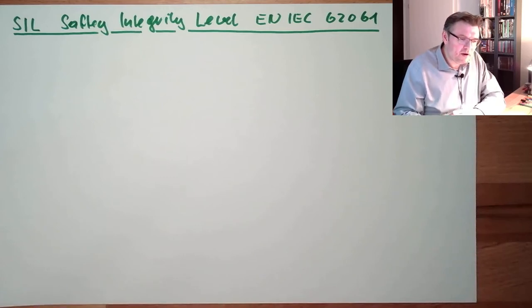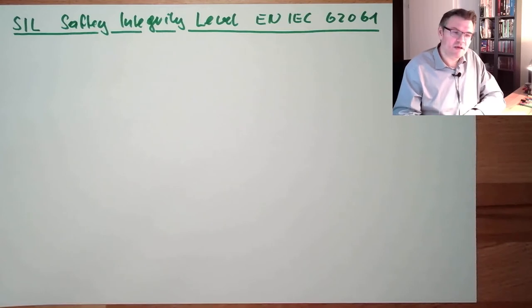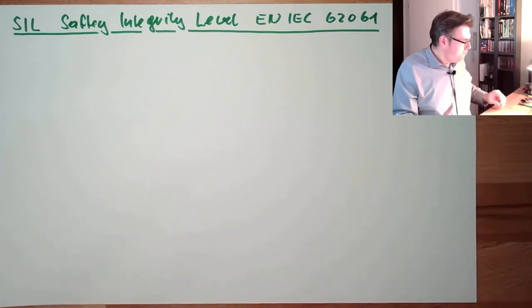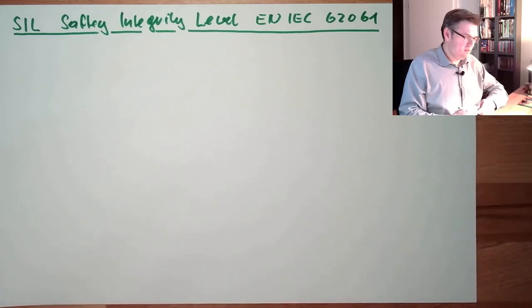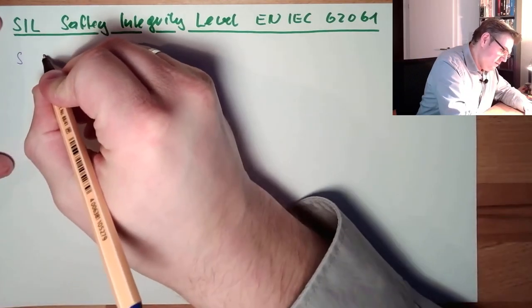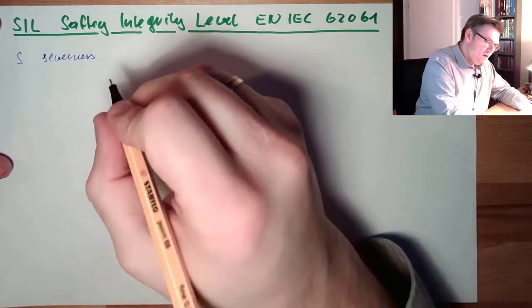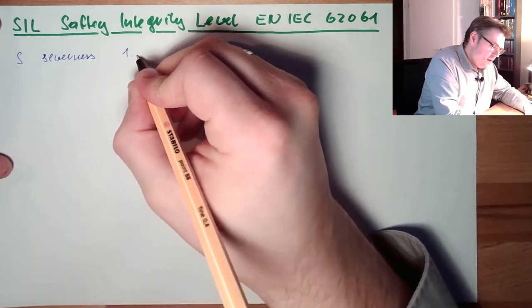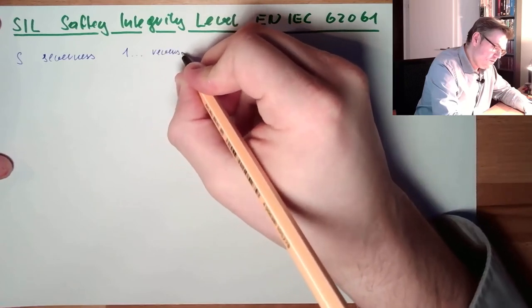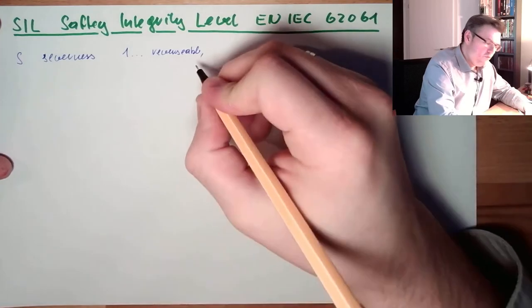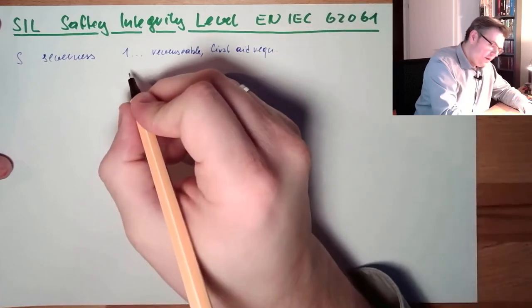First, we are going to talk about how we can determine what SIL level we have to reach. This is slightly different from the Performance Level. There are some things we have to take into account. One thing is the so-called Severeness, S. That is simply a value.